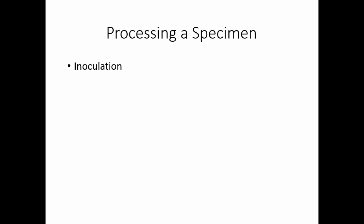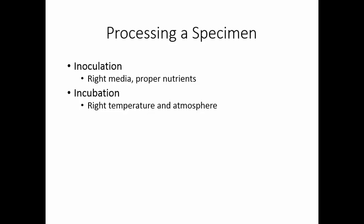To process the specimen, we have to consider the five I's of specimen processing. We start with inoculation — this is putting the organism on the right media with the proper nutrients. Then we have to incubate the specimen, which means putting it at the right temperature and in the right atmosphere. As we're inoculating the specimen, we want to use techniques that give us isolated colonies.